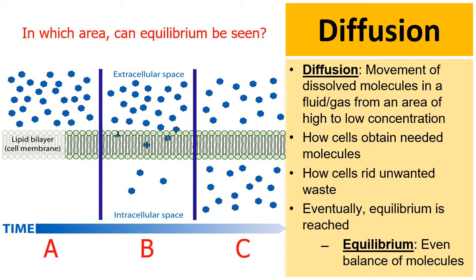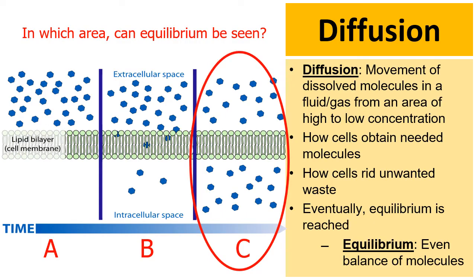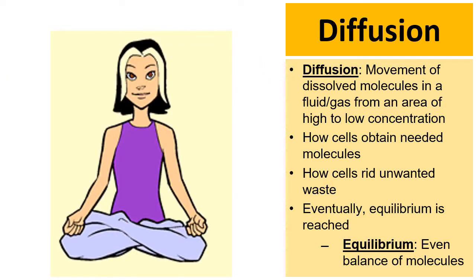Eventually, diffusion continues and a balance is reached — an equilibrium — where there's an even balance of molecules. In my picture, in which area, A, B, or C, can we see equilibrium? That's picture C. When we look at diffusion, we can look at how we breathe and understand how diffusion plays a role in this process.